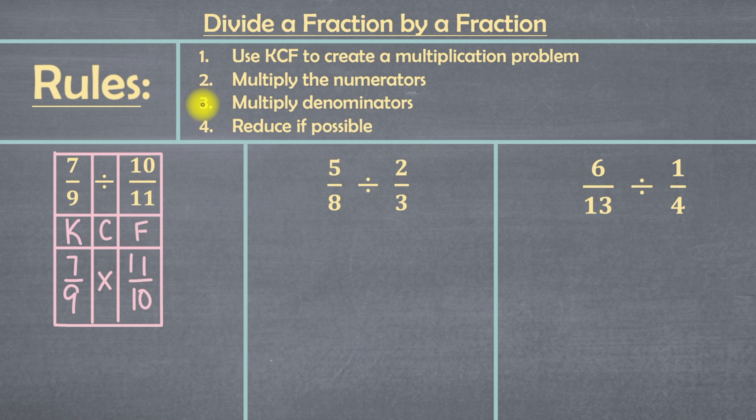So now we go to rule 2, which is to multiply the numerators. Our numerators here are 7 and 11. Because remember, the numerators are just the tops of your fractions. So this means I'm going to multiply 7 times 11. And that gives me 77.